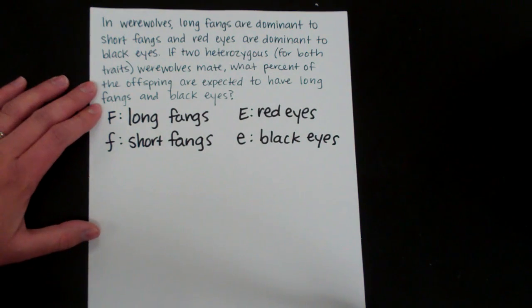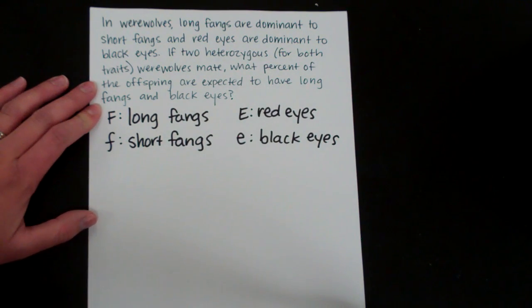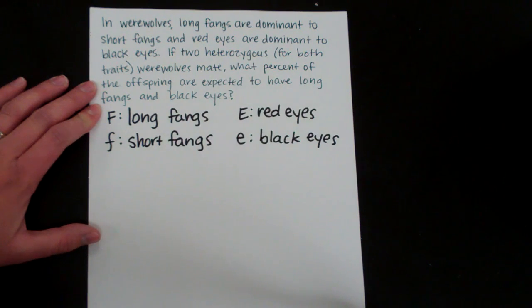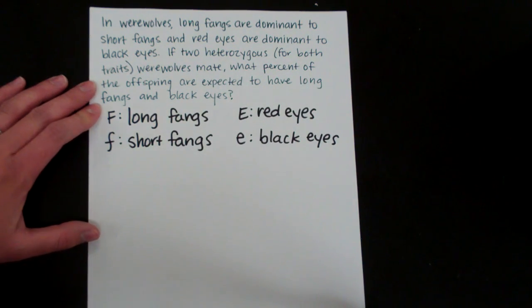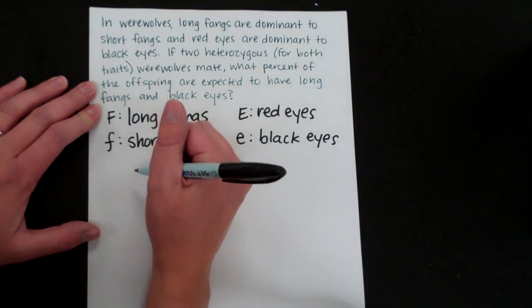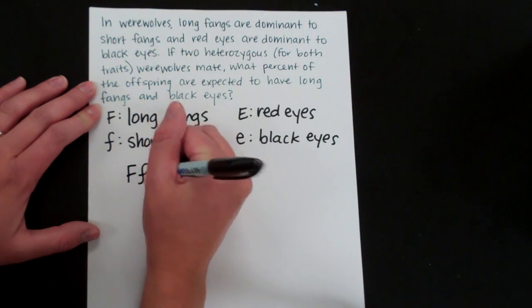So the problem says if two heterozygous werewolves mate, what percent of the offspring are expected to have long fangs and black eyes? So it says they're heterozygous for both traits. So that means both parents have this genotype.